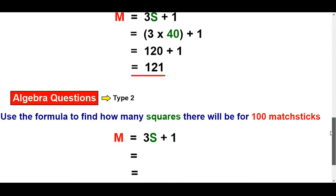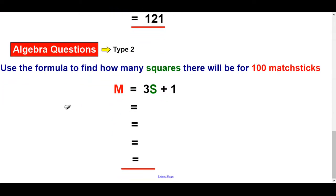Right, let's look at the other type of question you might be asked. So use the formula to find how many squares there will be for 100 matches. So this time I'm telling you this side is 100. So 100 is equal to three times something, add one.